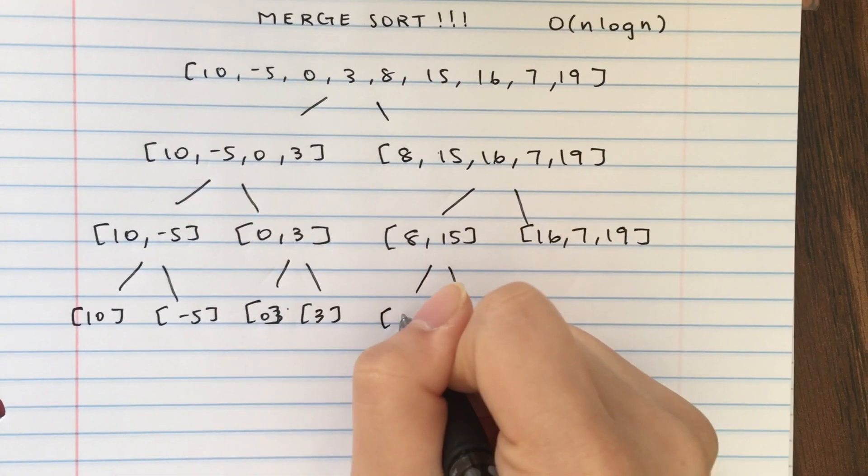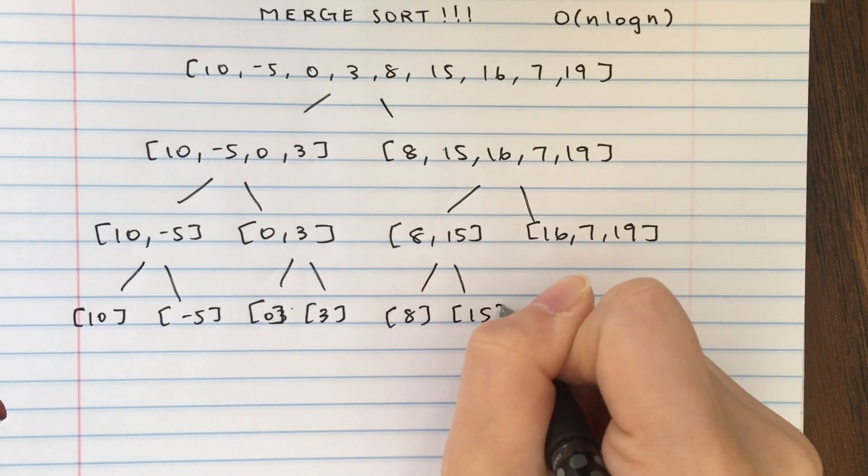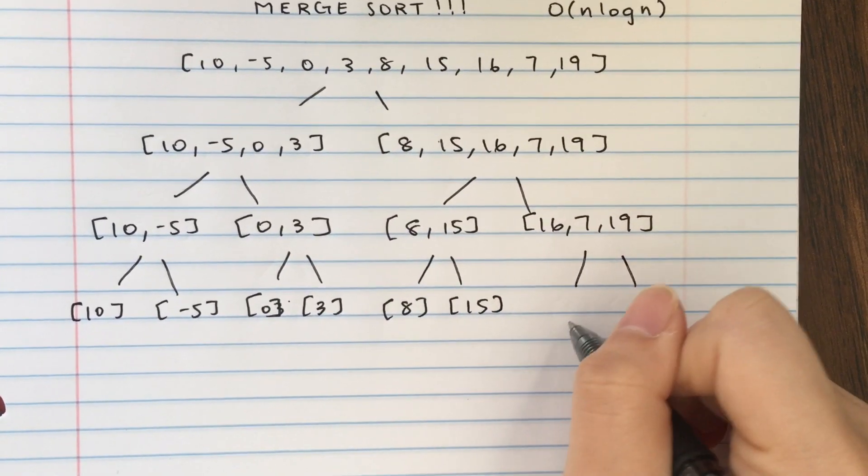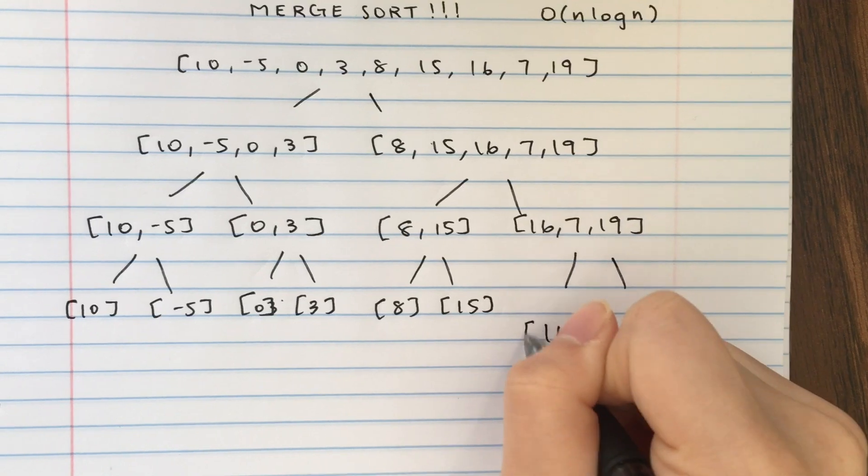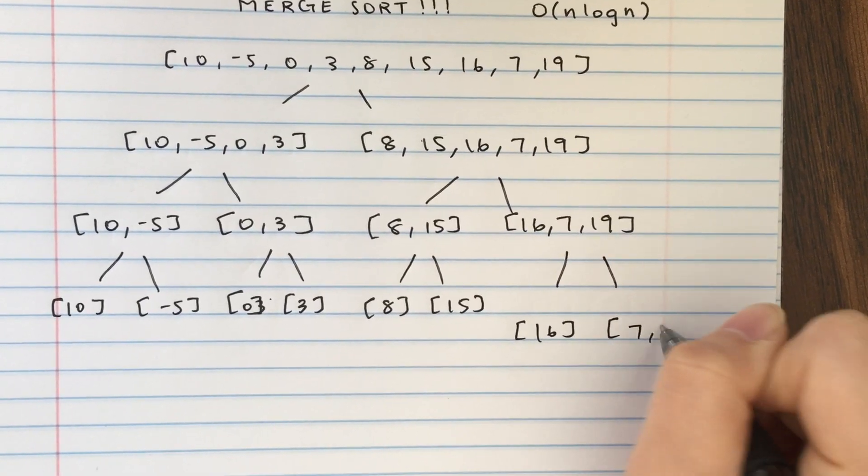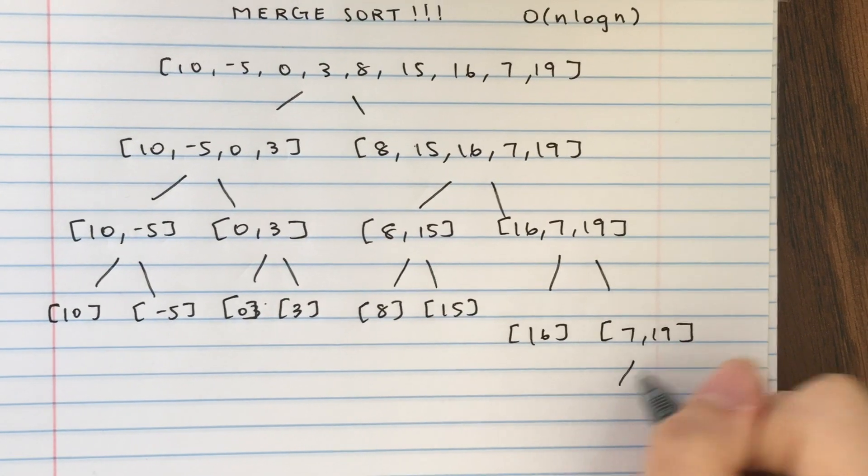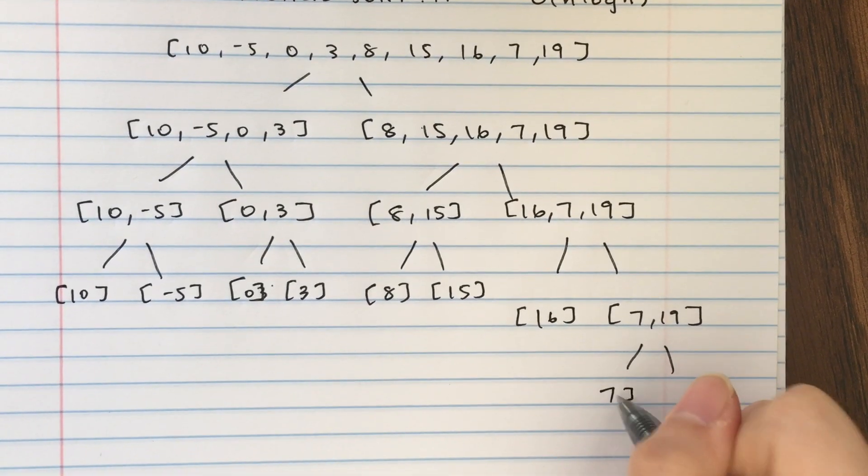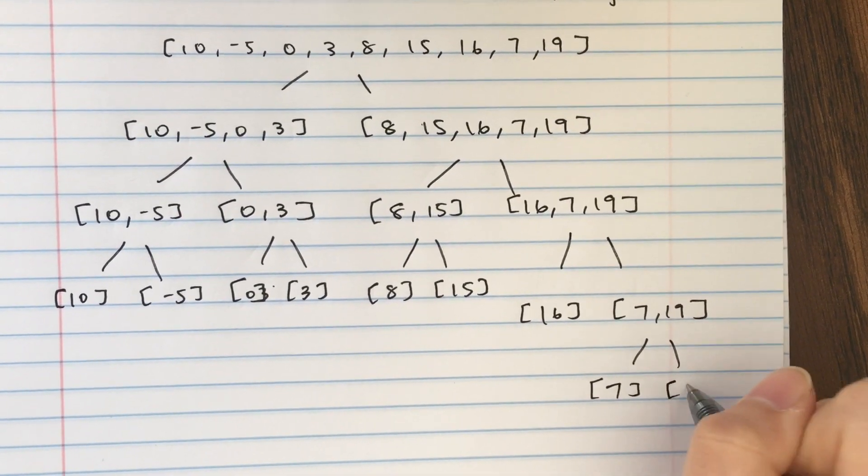And then this is going to divide into 8, 15. And we're still not done yet, so we have to separate these. And then this is going to divide into 7 and 19.